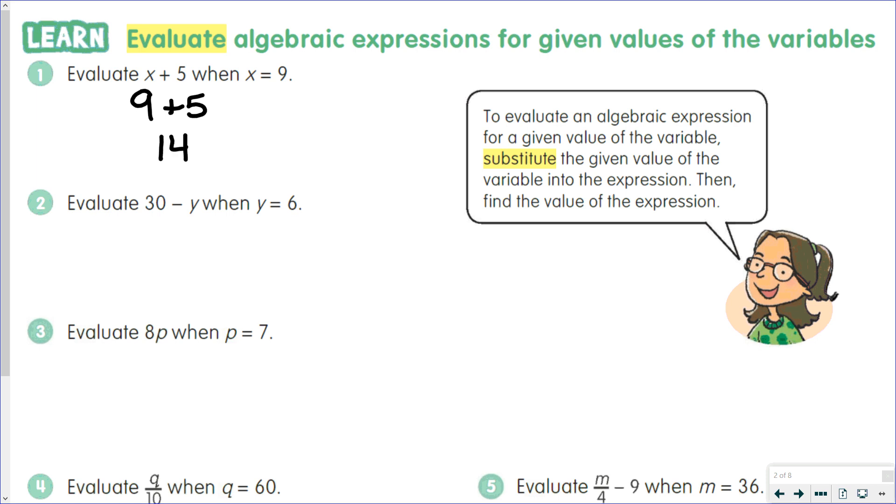So if we evaluate 30 minus Y when Y equals 6, we're going to take out the Y and put in 6, and 30 minus 6 is 24.